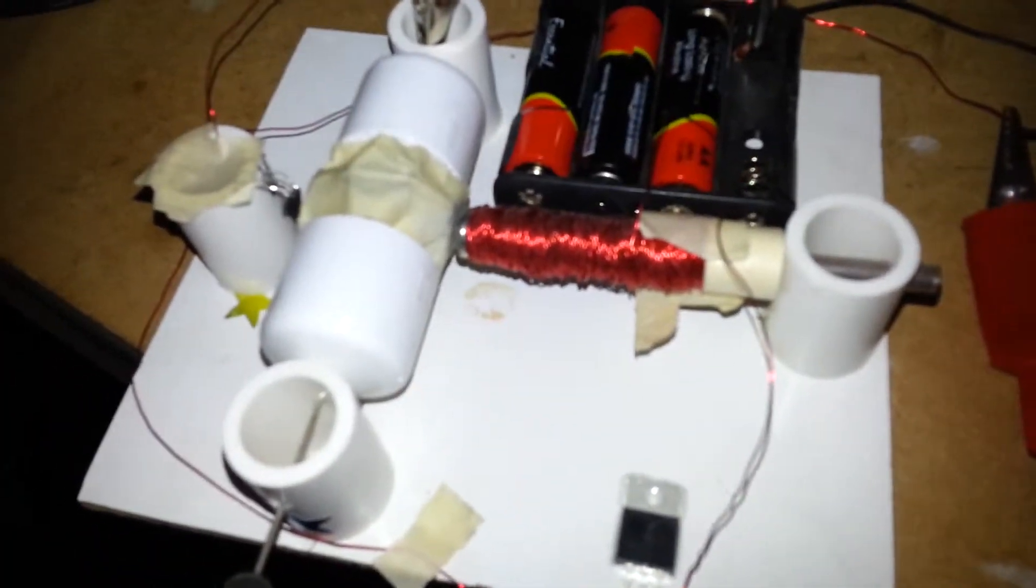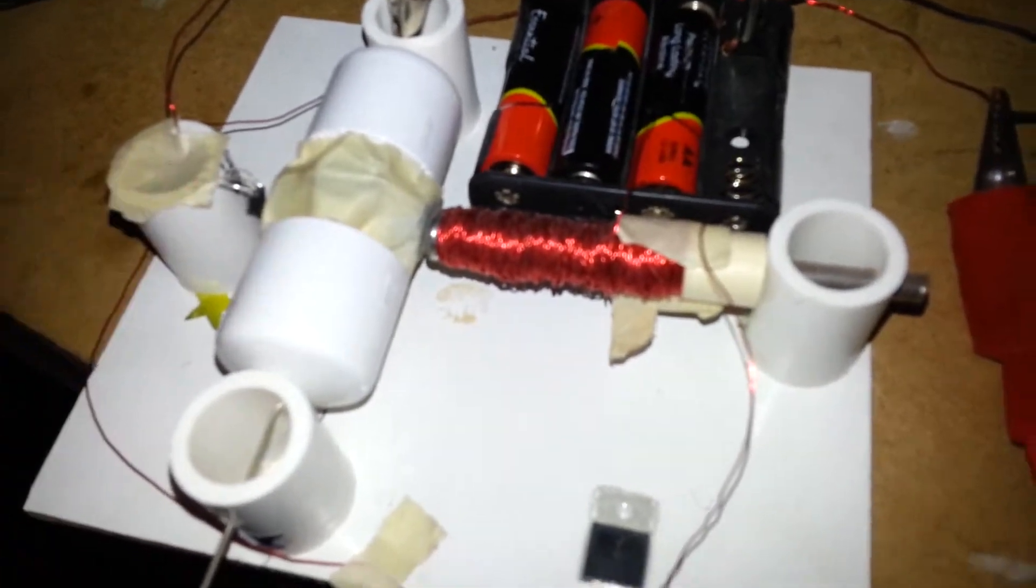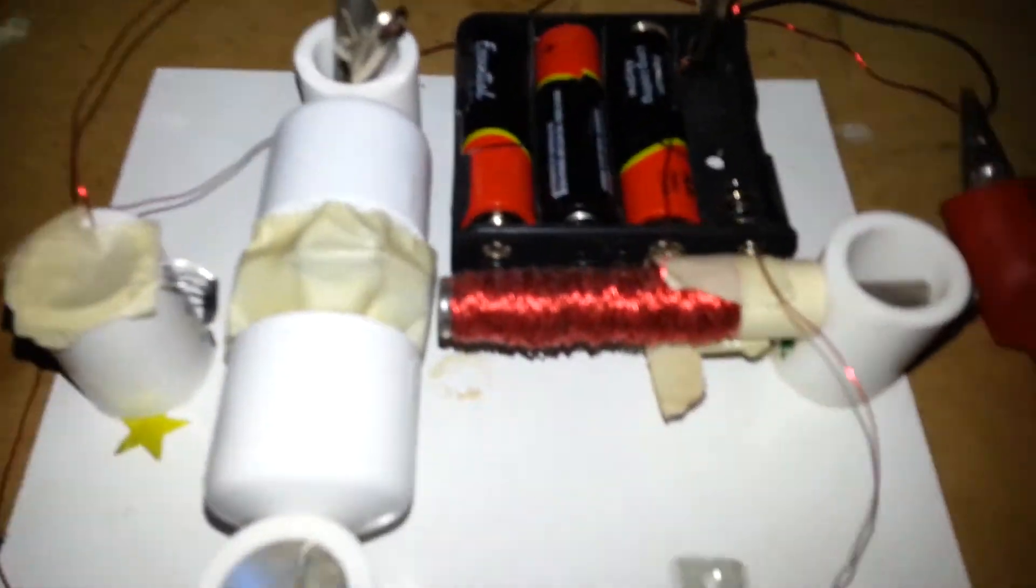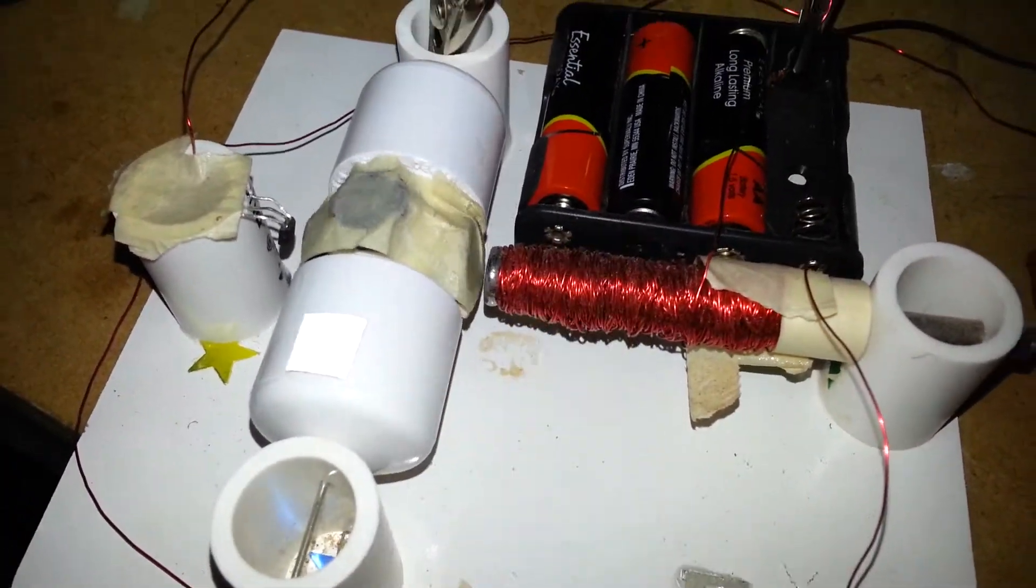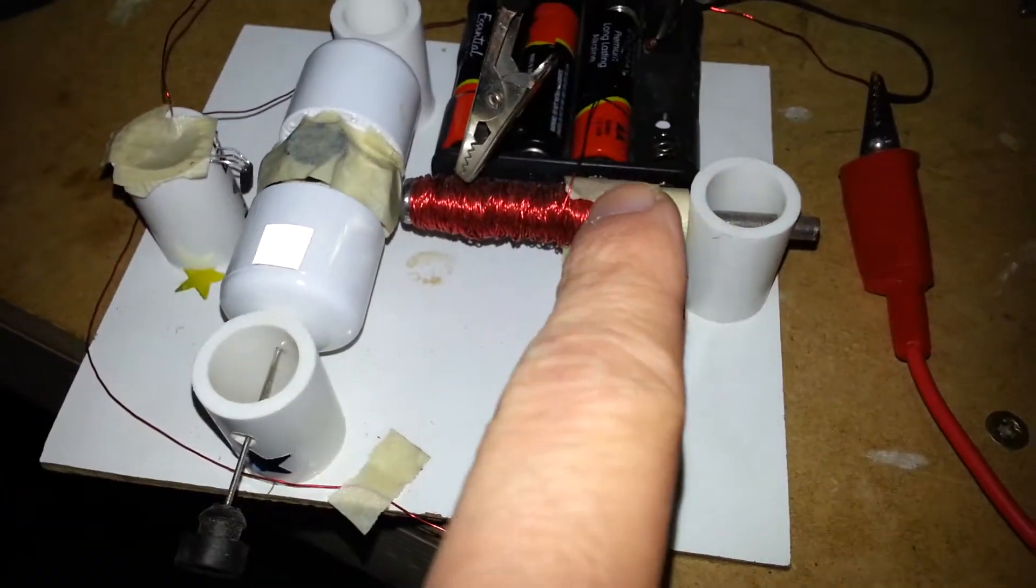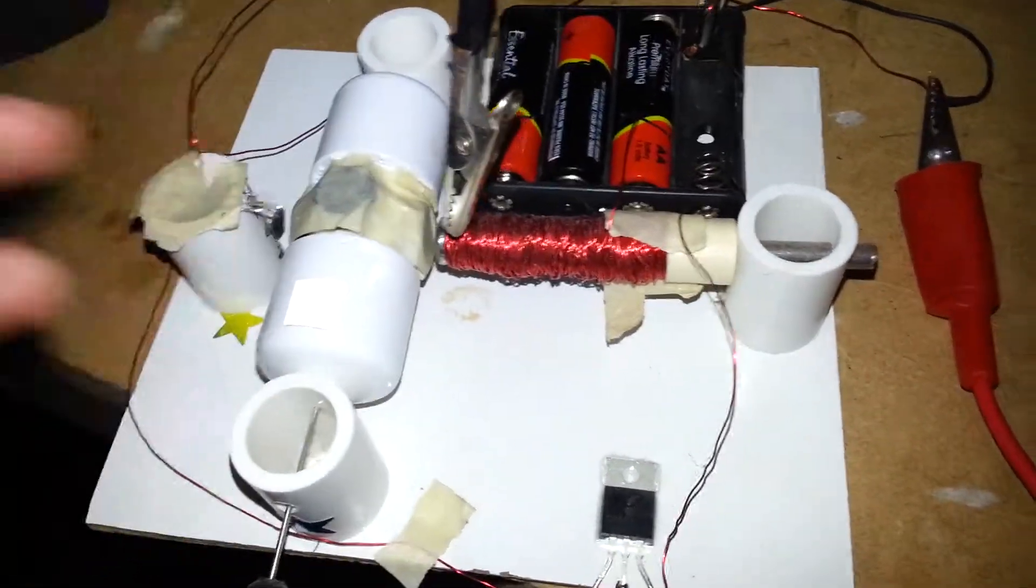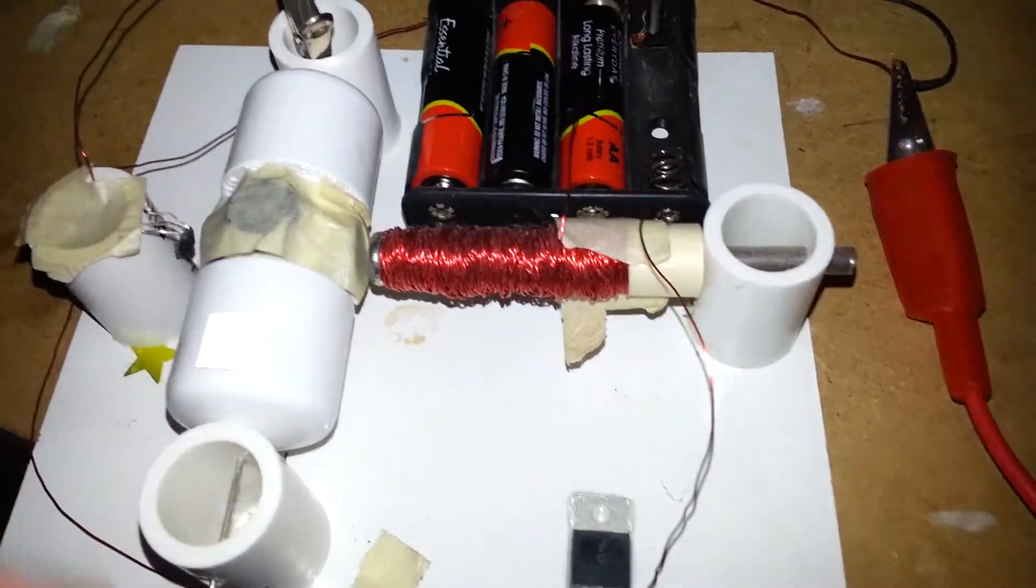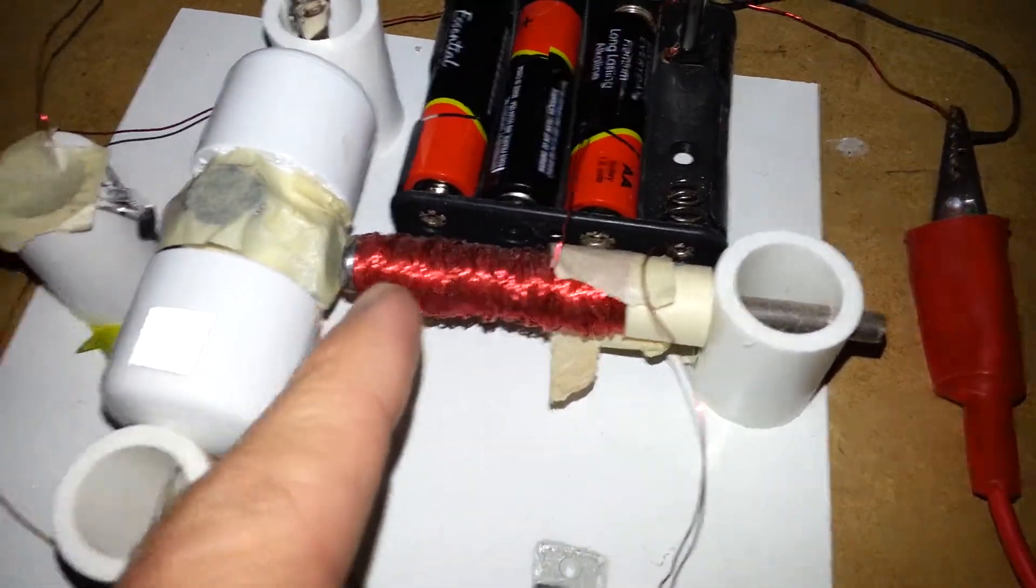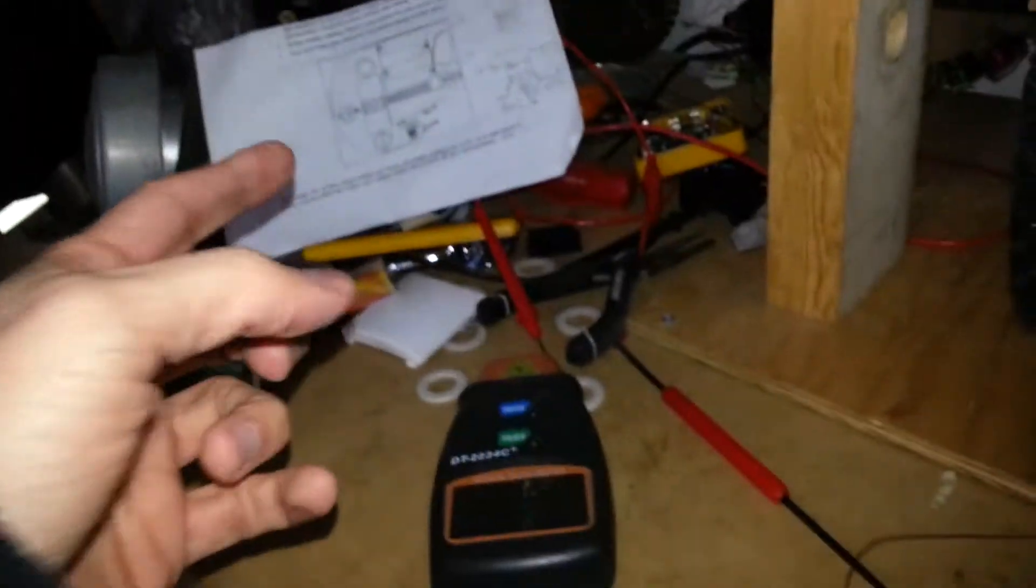That transistor then turns on and allows current to flow through the coil. When it no longer detects a magnetic field, it turns off, turning off the Darlington transistor, and therefore you no longer get current in the coil. It's a really simple design, but getting this to the exact right position is kind of difficult. Now, a couple things to note here that they don't necessarily tell you.